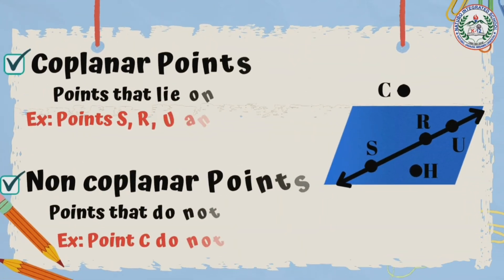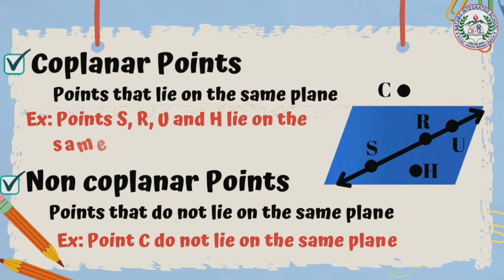Also, we have coplanar points and non-coplanar points. Coplanar points are points that lie on the same plane. So try to look at the plane at the right. We have points S, R, U, and H lie on the same plane, so therefore they are coplanar points. On the other hand, non-coplanar points are points that do not lie on the same plane. So in the illustration, point C does not lie on the same plane. Therefore, point C is a non-coplanar point. Just remember, collinear points in the same line, coplanar points on the same plane. Collinear for line, coplanar for plane.